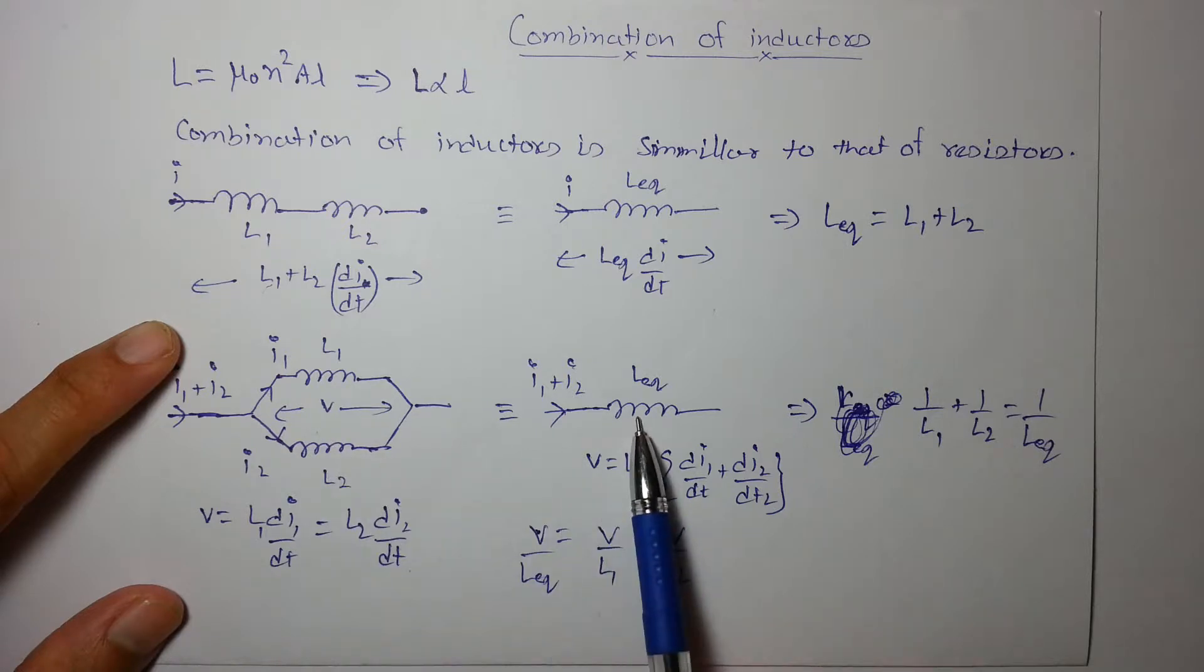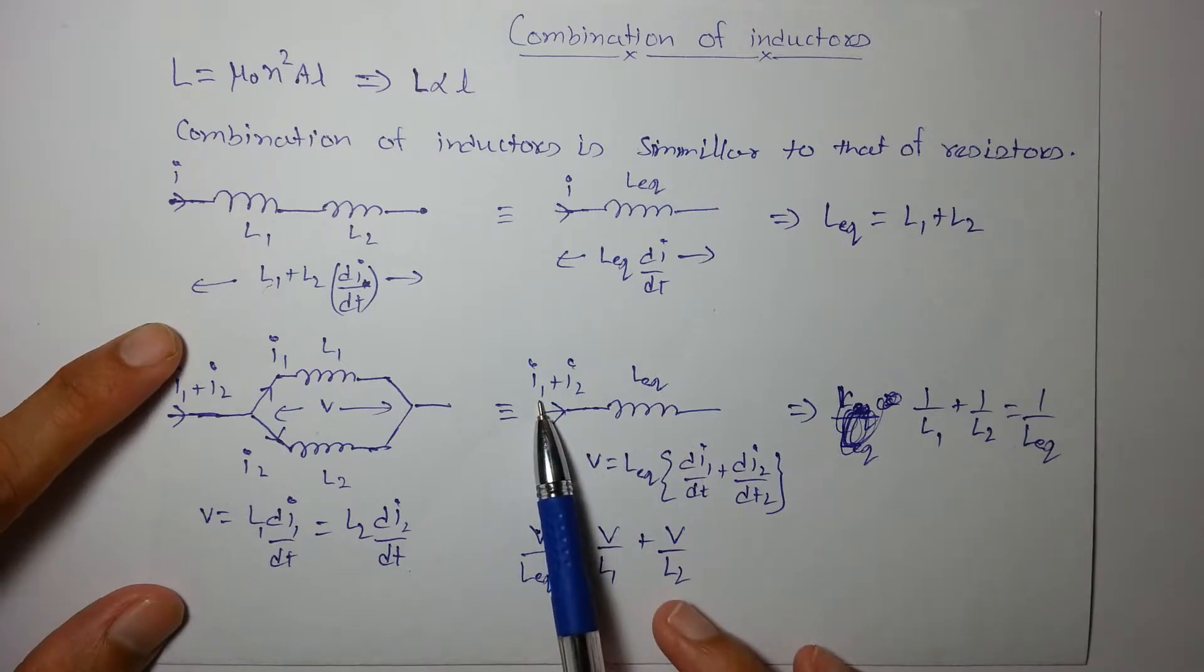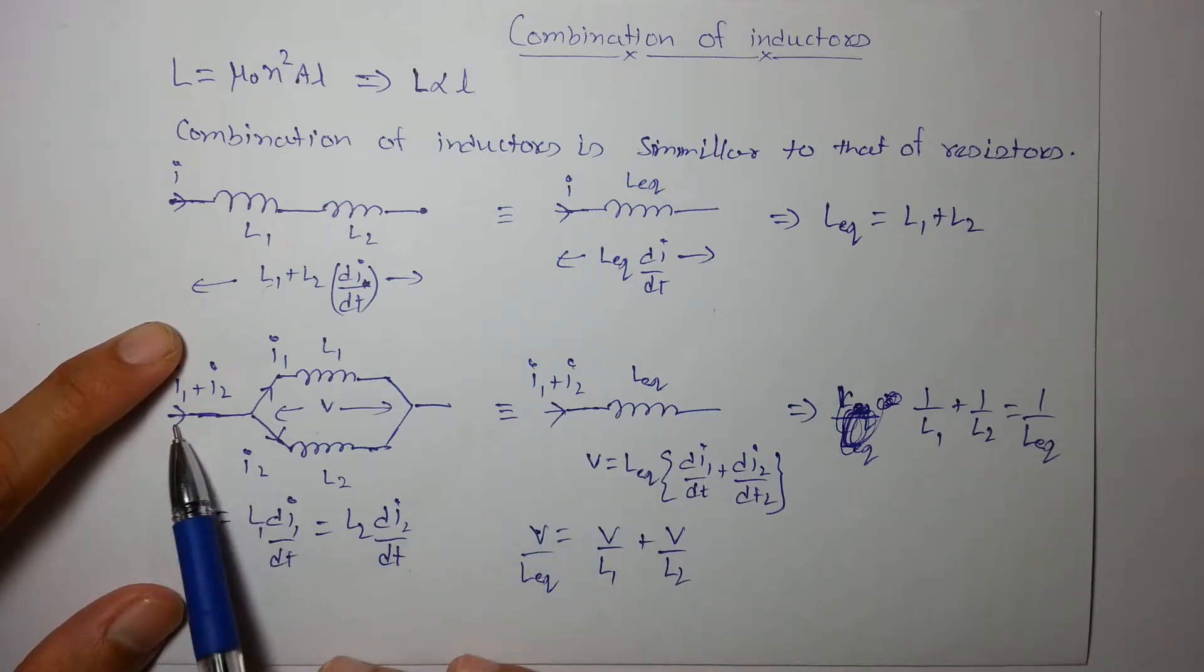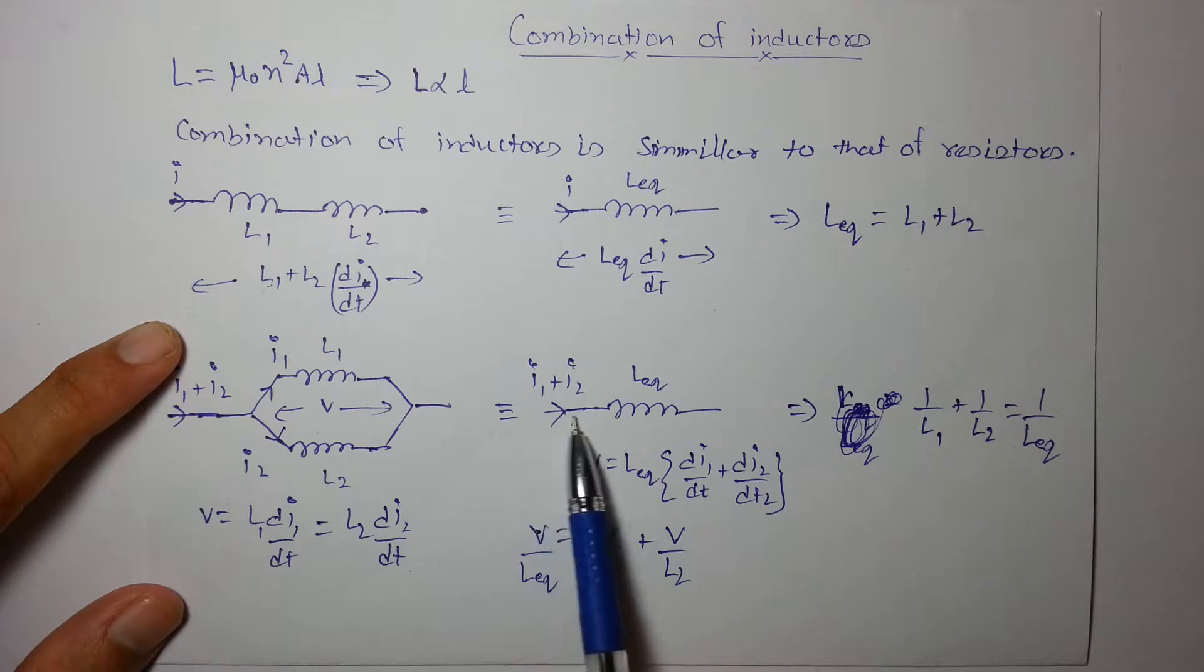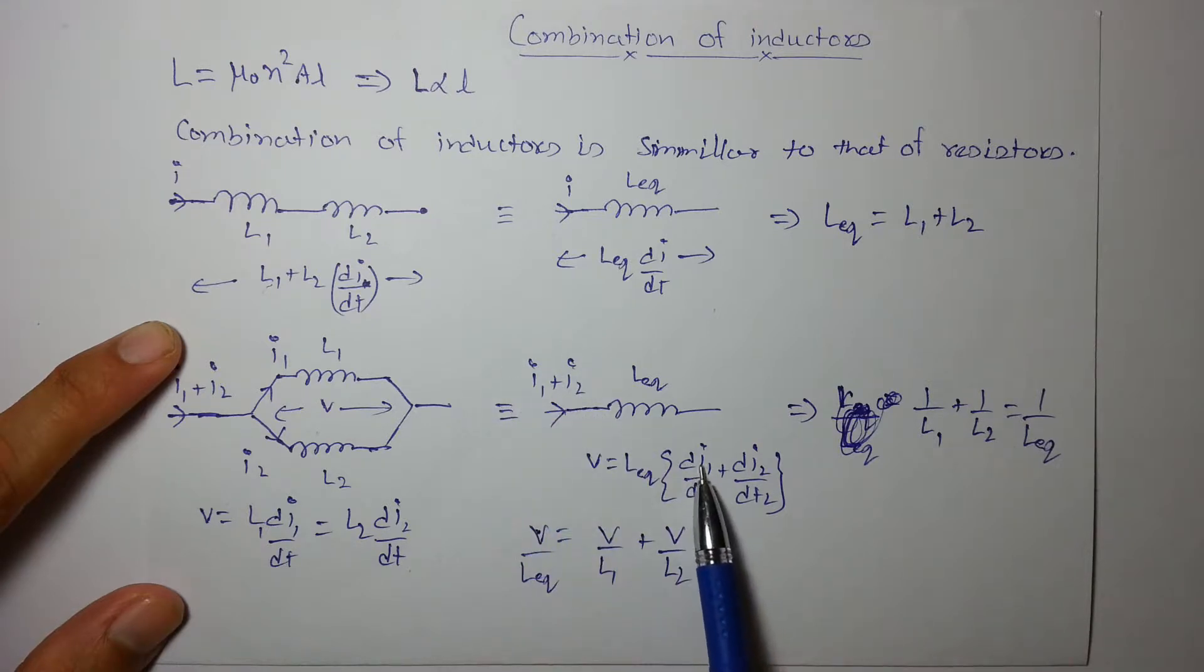When in place of these two inductors we use a single equivalent inductance called L equivalent, I₁ + I₂ will be the current passing through this. The voltage across it will be L_eq times the rate of change of the total current, which is d(I₁ + I₂)/dt.